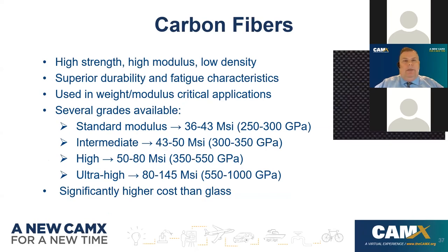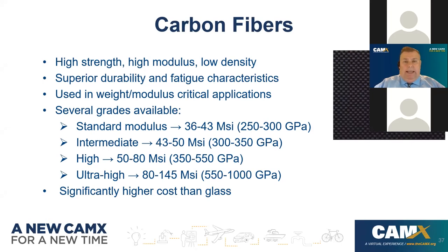Carbon fibers have high strength, high modulus, and low density. They are superior in durability and fatigue characteristics, used in many critical applications where weight and stiffness are paramount. Several grades are available: standard modulus (36–43 million PSI — already higher than steel's 29 million), intermediate modulus, high modulus, and ultra-high modulus (often used in space applications where stiffness, stability, strength, and durability are critical). Carbon fiber is significantly higher in cost than glass, so you want to apply it where properties provide real value.